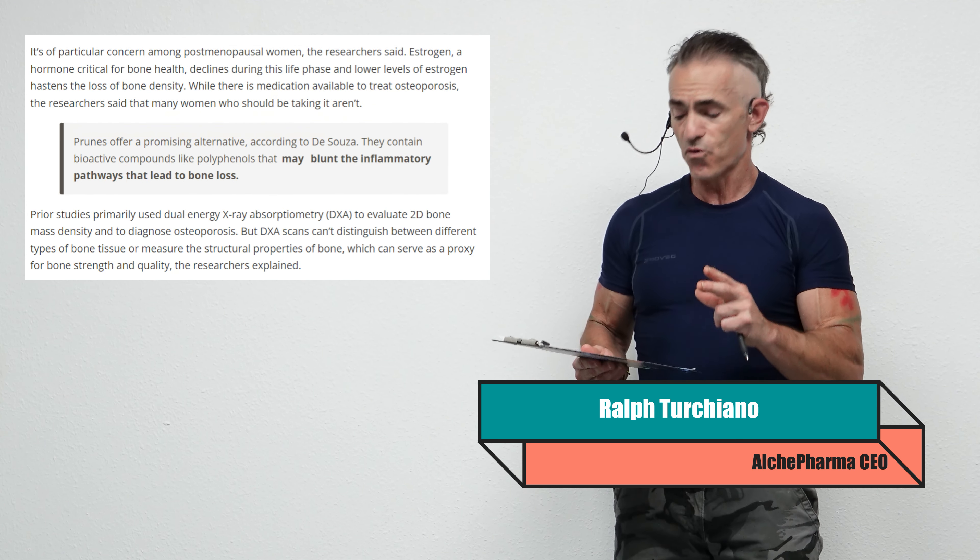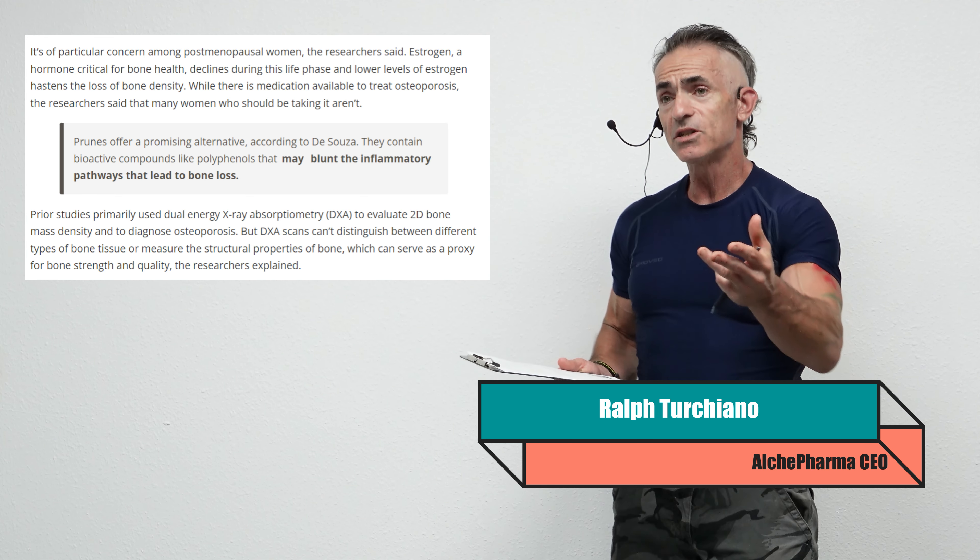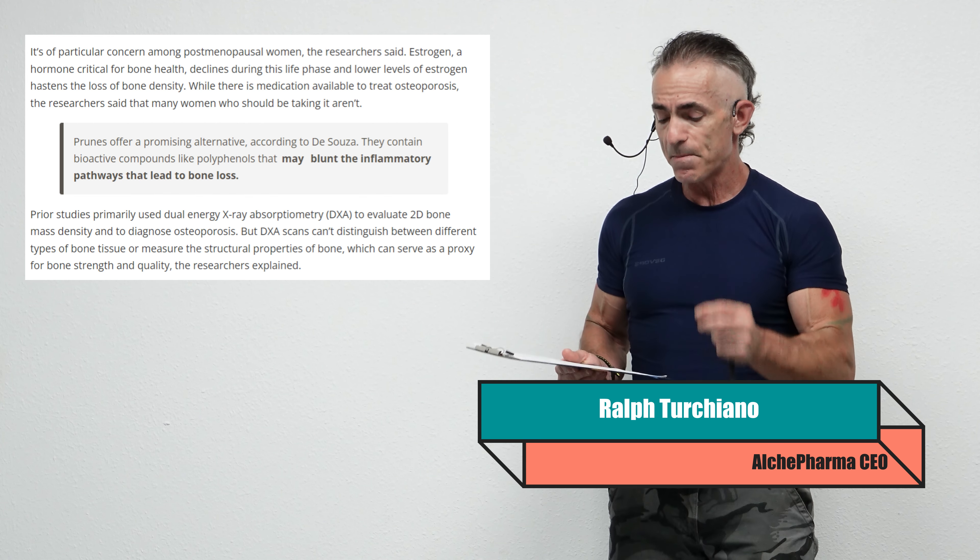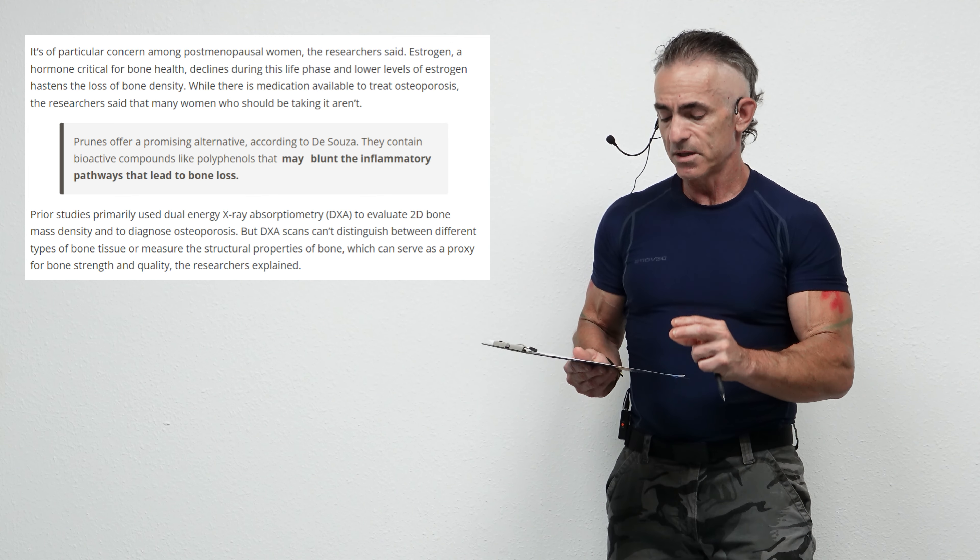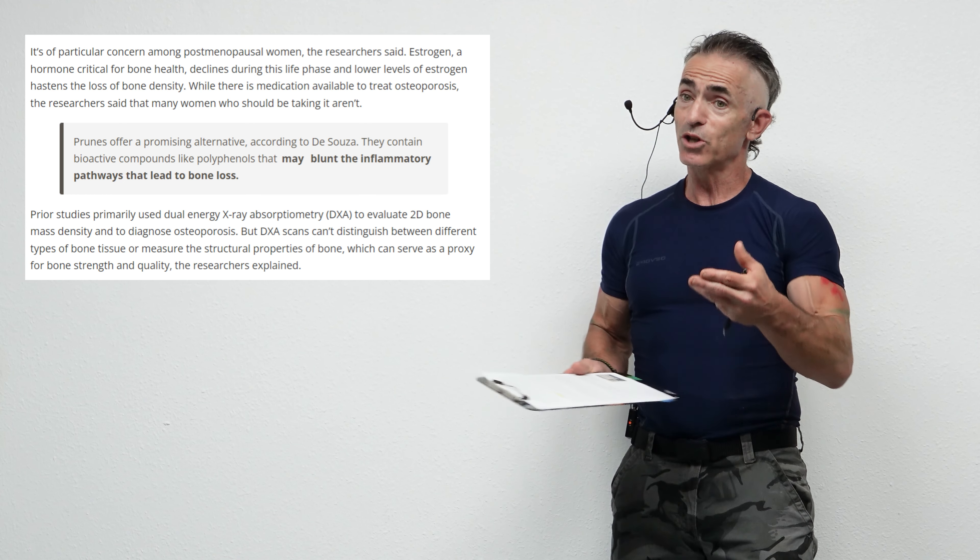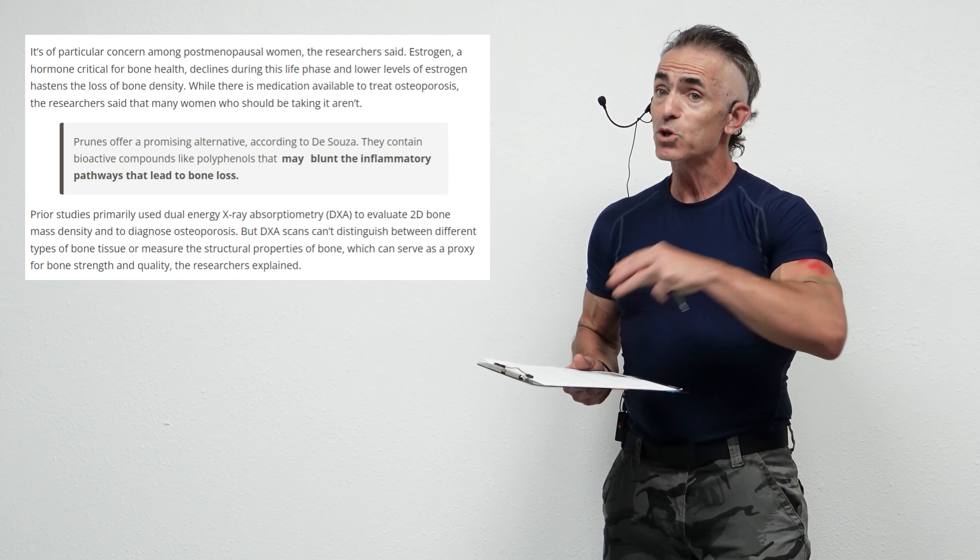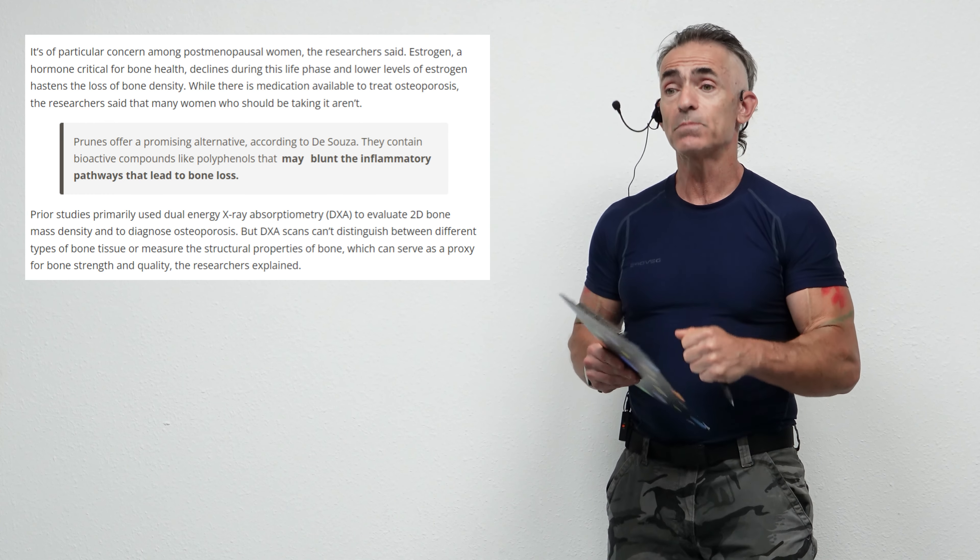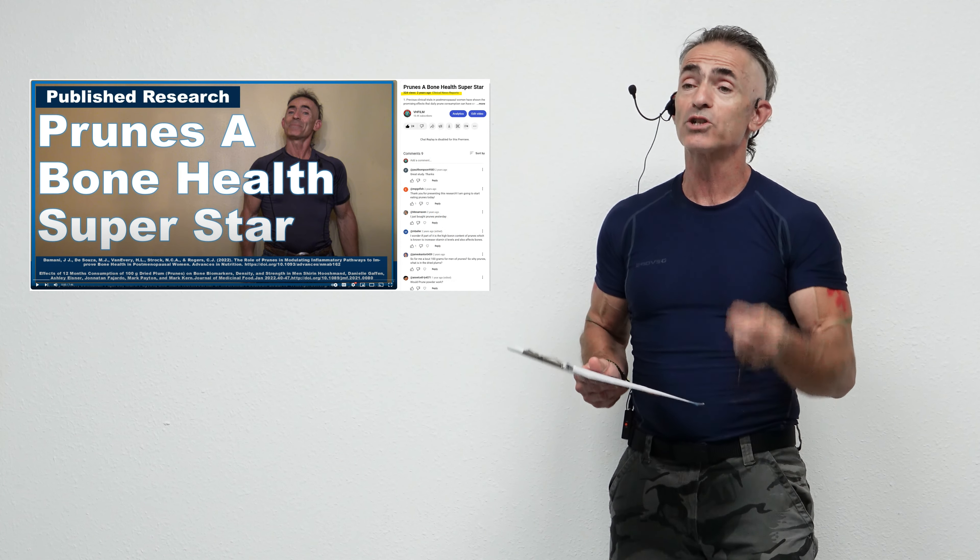Prunes offer a promising alternative, according to the doctor. There's a hypothesis of why prunes may appear to work so well. They contain bioactive compounds like polyphenols that may blunt the inflammatory pathways that lead to bone loss. What's kind of interesting, because looking at more than just calcium, vitamin D, magnesium, and so on, we're looking at a really exceptional tool that seems to maintain other quality aspects of the bone beyond just density that can help reduce fracture risk.